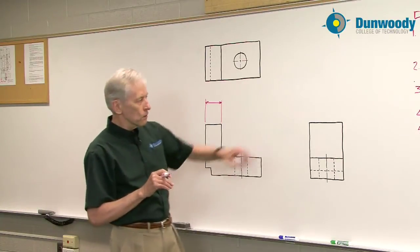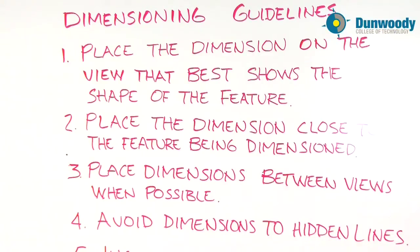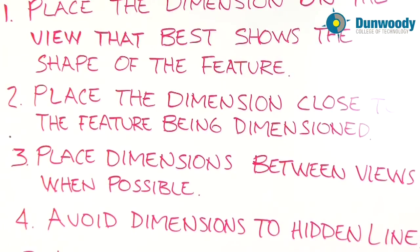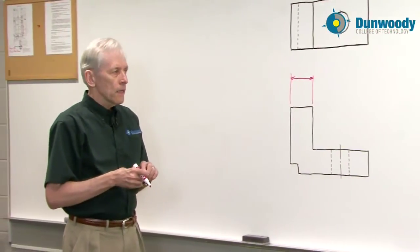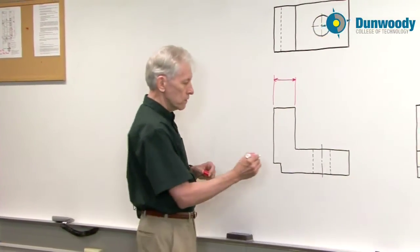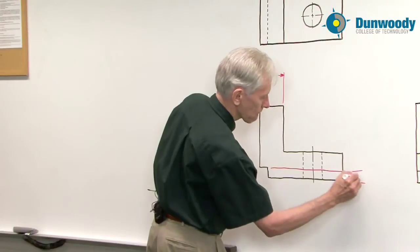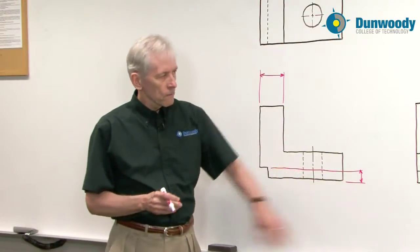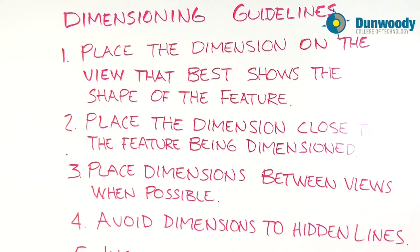Now, I'm going to include with this guideline number three, which says place dimensions between views when possible. I have to emphasize when possible because these two can actually be in conflict. If I followed guideline number three, for example, and place the dimensions between views, I would have to draw a long extension line across the part. This dimension does meet guideline number three, but it violates guideline number two.